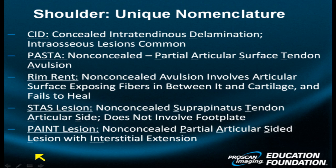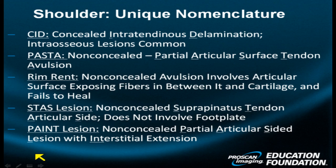We have the PASTA lesion, which is a non-concealed partial thickness tear. In other words, it can be seen by the arthroscopist — known as the Partial Articular Surface Tendon Avulsion.